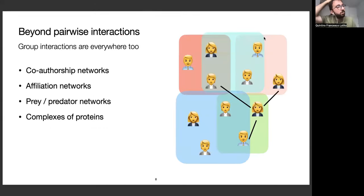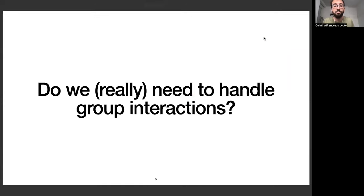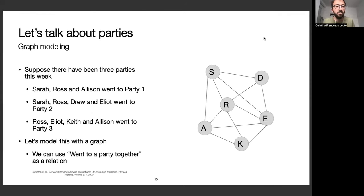It's natural to go further, because in nature it's common to see group interactions. For example, co-authorship networks are an example — people write papers together in groups. So it's natural to ask whether we need to explicitly encode this new information in our model. Do we really need to handle group interactions in the same way we need to encode temporality or modality of interactions?